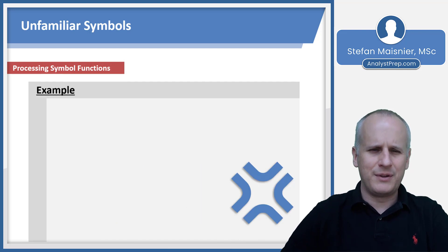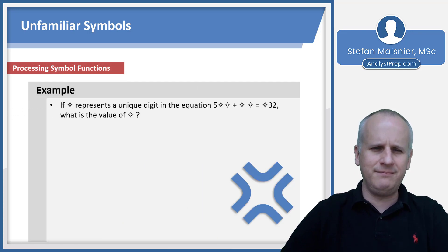We've got an example here with this interesting diamond cross symbol. If that diamond cross represents a unique digit in the equation, five diamond cross diamond cross plus diamond cross diamond cross equals diamond three two, what is the value of the diamond? First remain calm, right? We've got to make sure that we recognize all of the information we need is here. We've just got to parse it.